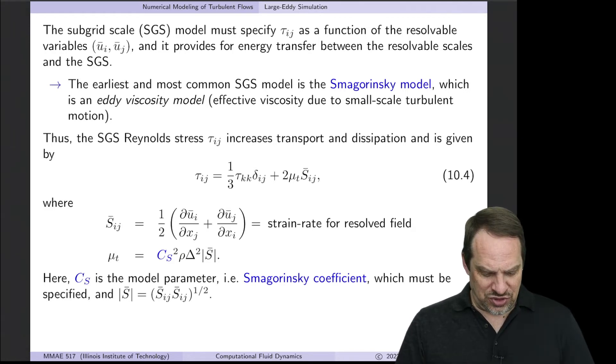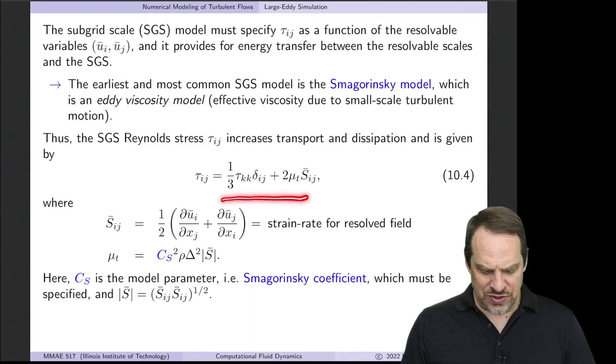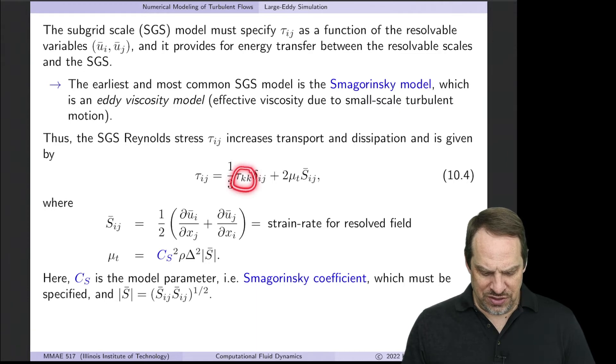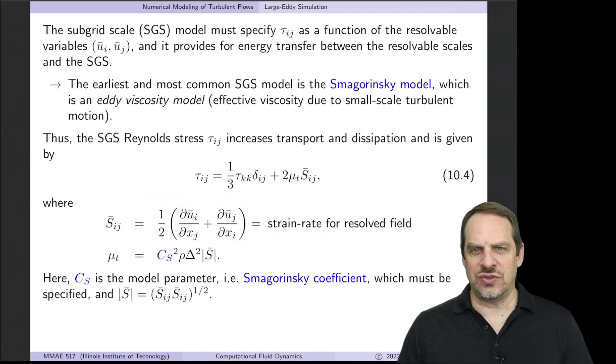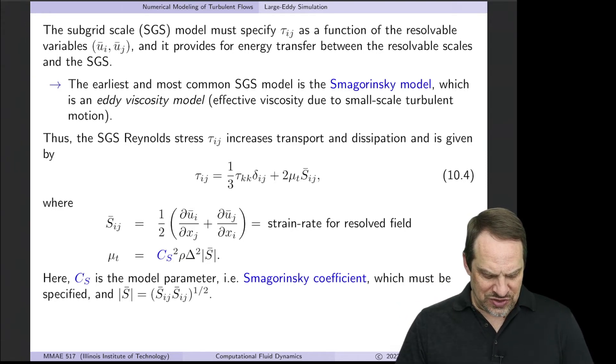Here's the basic approach. The SGS Reynolds stress τ_ij involves τ_kk, δ_ij, μ_t, and S_ij bar. S_ij bar is the strain rate for the resolved field—the strain rate tensor from the resolved field. The eddy viscosity μ_t is C_s squared times density ρ times filter size Δ squared times the absolute value of S bar.